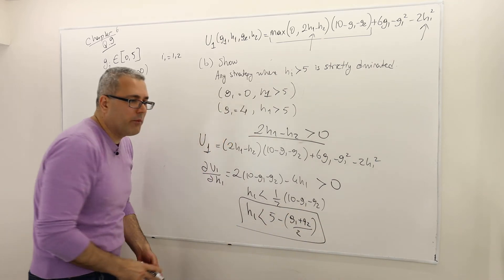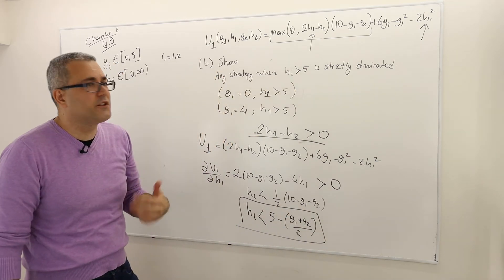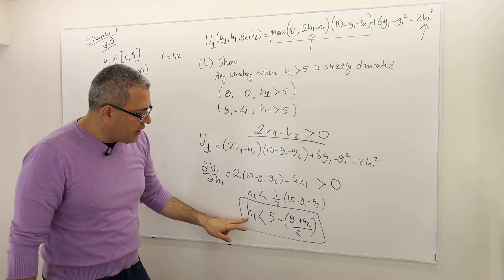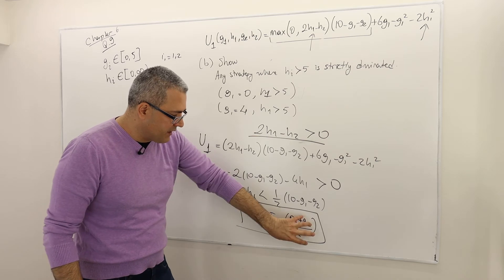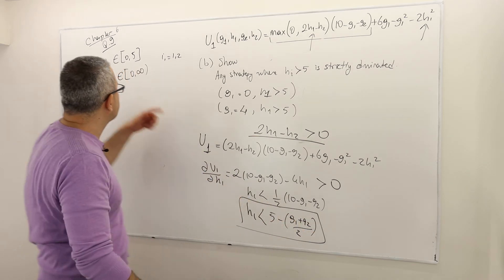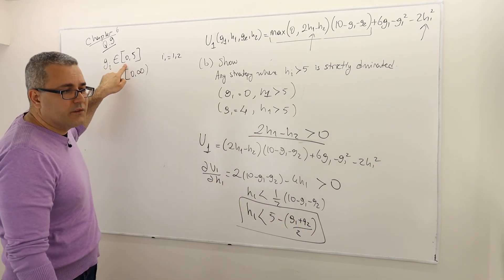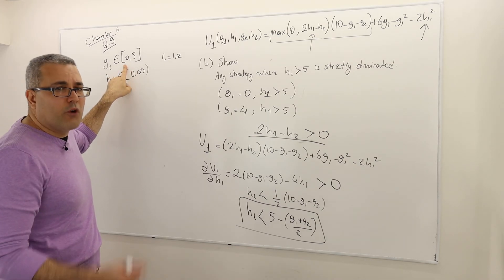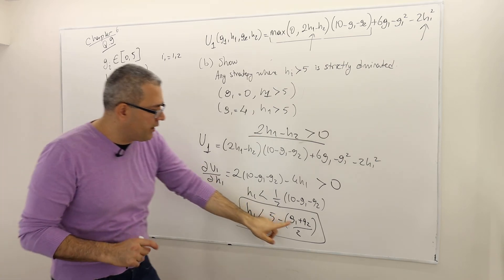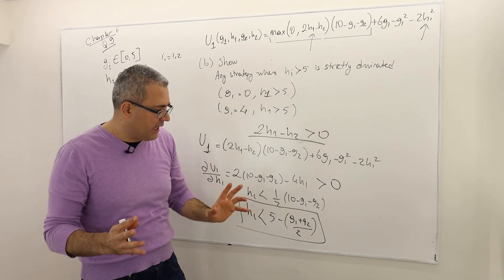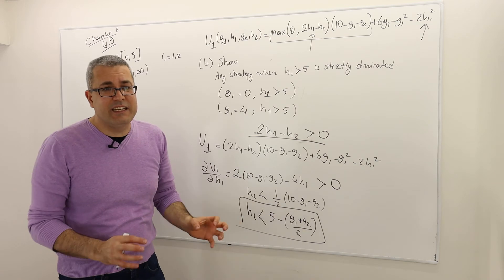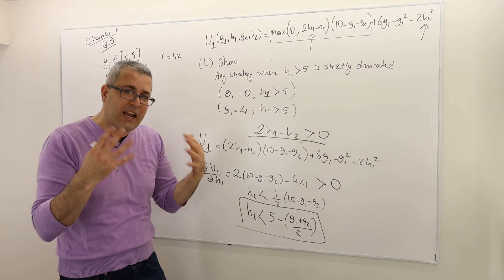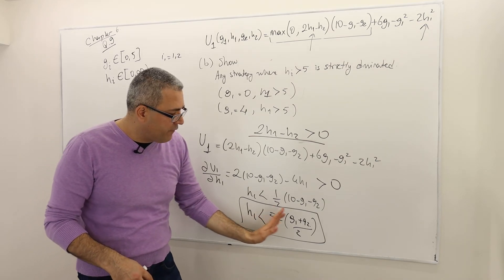Okay. Hmm. This is probably why I have this H1 greater than 5 strictly dominated idea. So it says the following. If H1 is less than 5 minus something. So, by the way, G1 is a positive number, right? Because for player 1 and 2, you know, G_i has to come from the interval 0, 5. So G1 is non-negative. G2 is non-negative. So this term is at least 0, but maybe more than 0. But it's positive or non-negative.